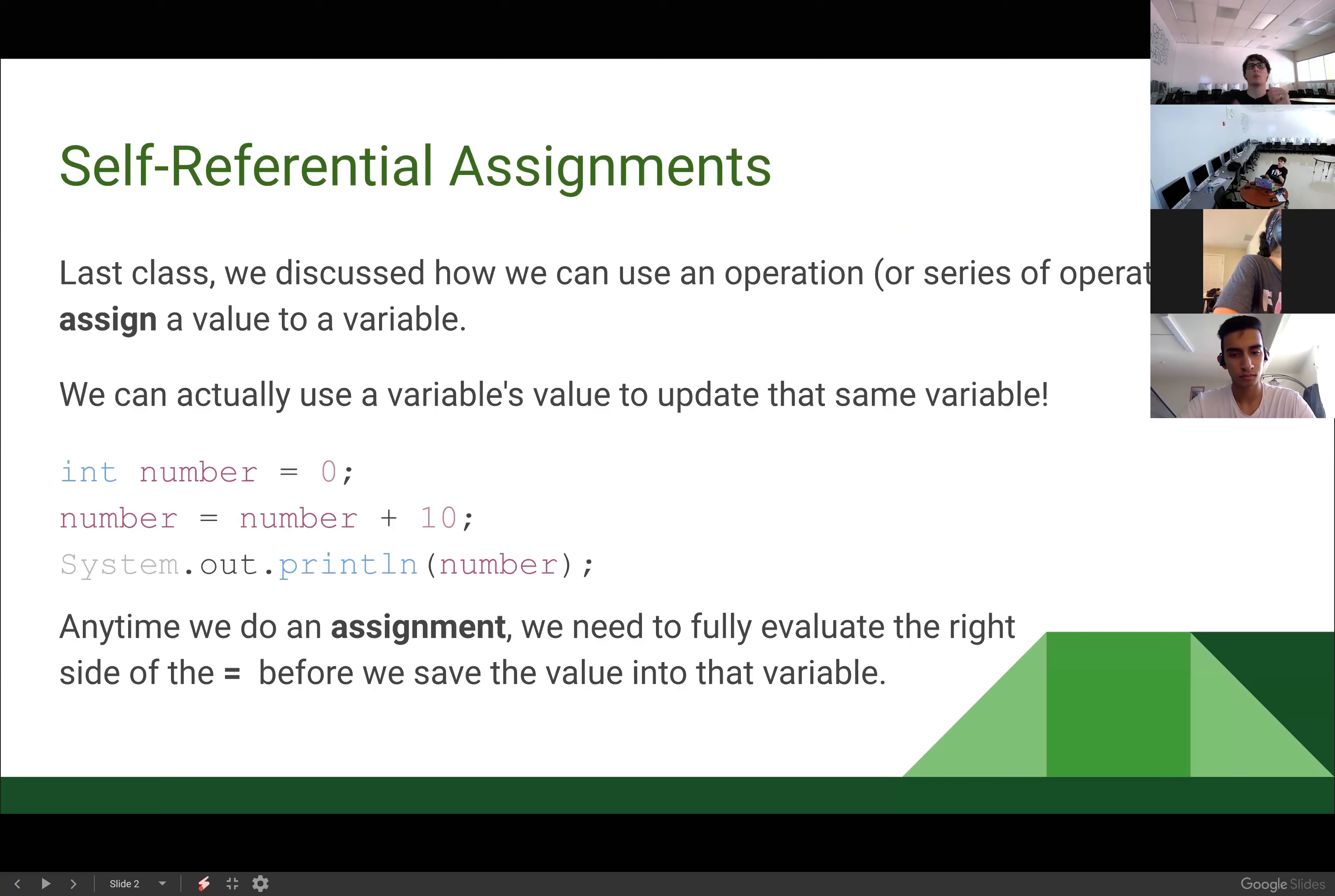Last class, we talked about how we can use an operation or a series of operations to assign a value to a variable. We can do some math to figure out a value and then assign that value to a variable. We can actually use a variable's value to update that same variable. Anytime that we do an assignment, we need to fully evaluate the right side of the equals before we can save the value into the variable. We need to completely solve the value over here, get an actual value, and then we can assign it.